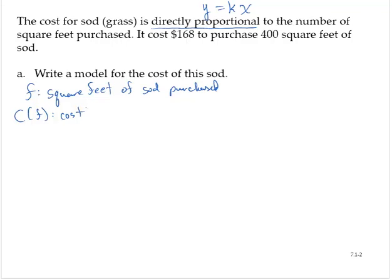Since the cost is directly proportional to the number of square feet purchased, then I can write that C(f) is equal to k times f. Now k is called a constant of proportion, and we generally need to find that constant.